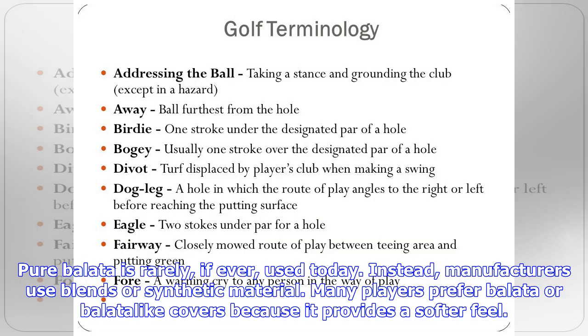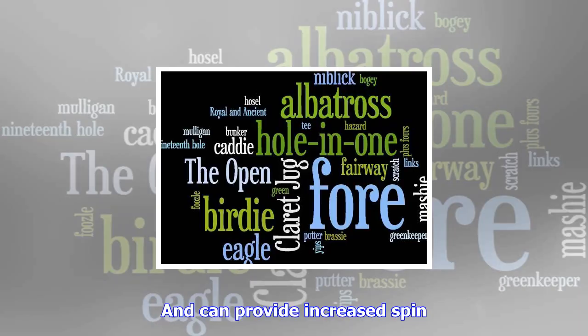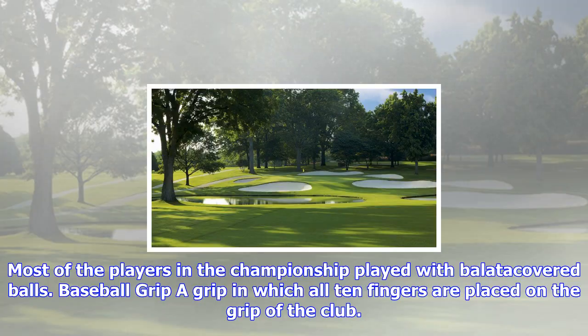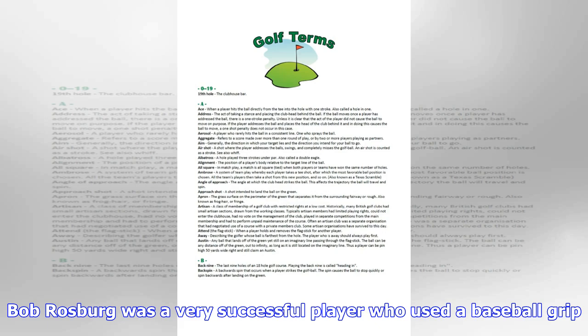Backspin: the rotational movement or spin of the ball produced by contact with the club face. The greater the backspin, the higher the ball will fly and the more it will spin and therefore stop or even spin backwards on impact with the turf. The ball had so much backspin that when it hit the green it spun back into the water hazard.